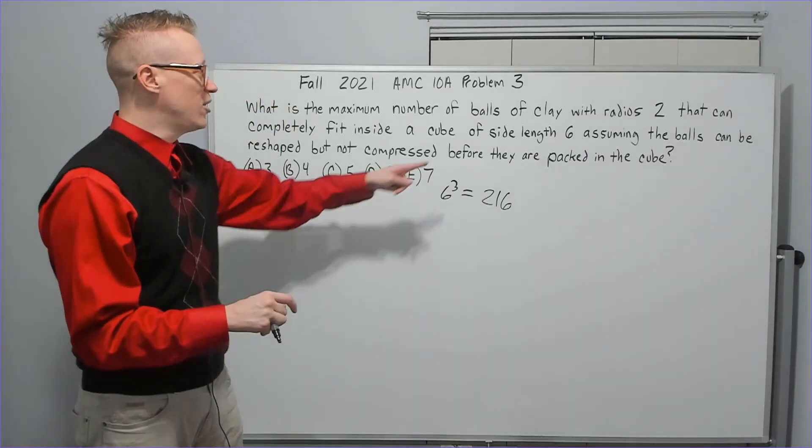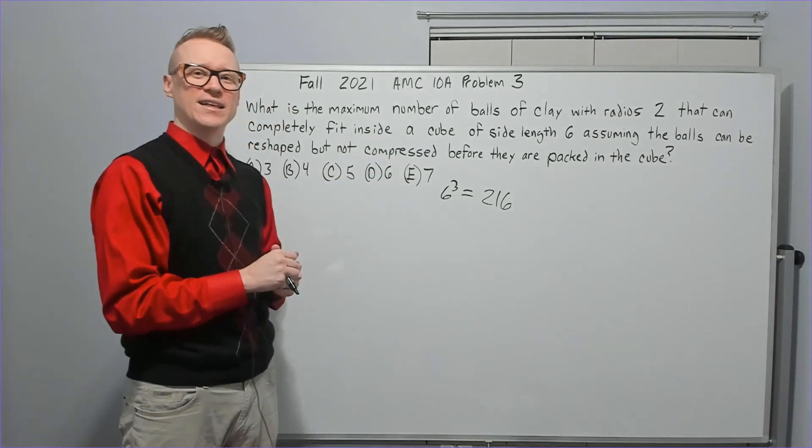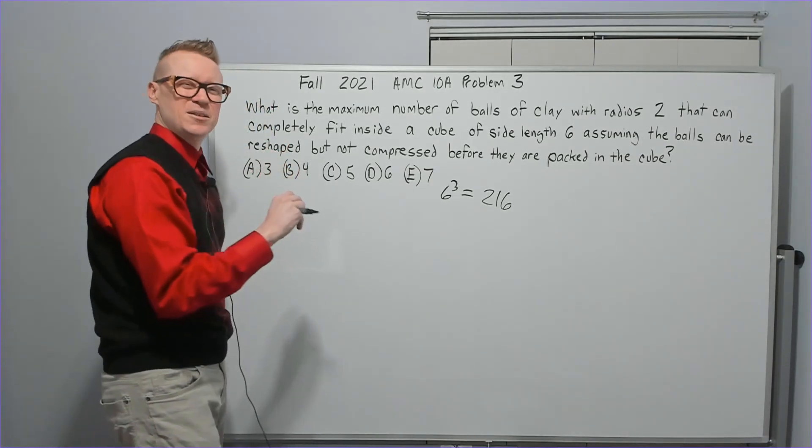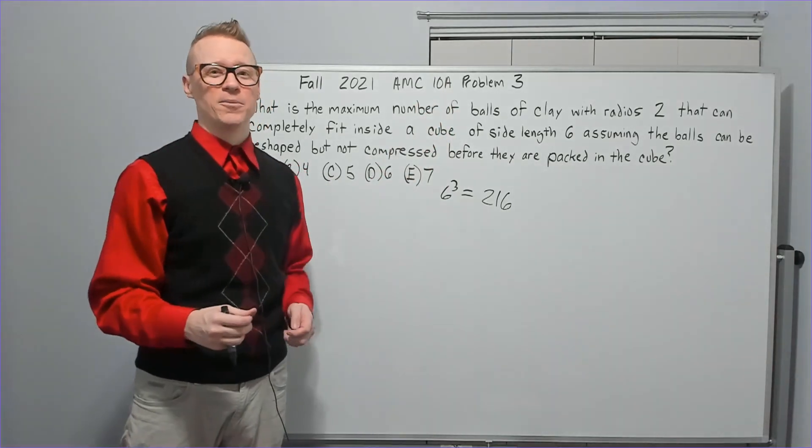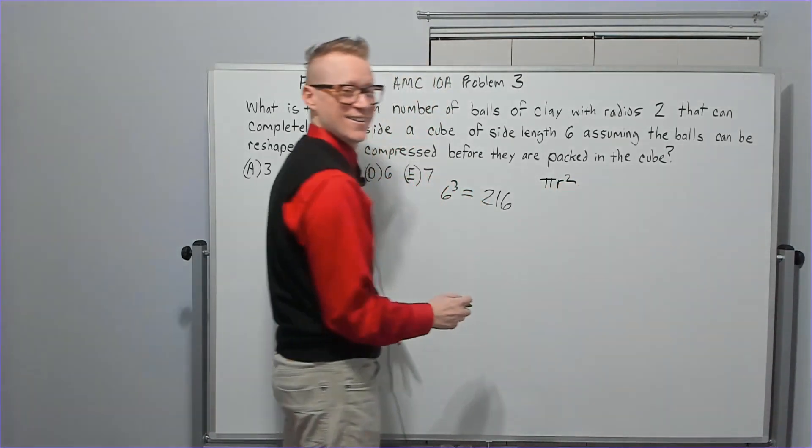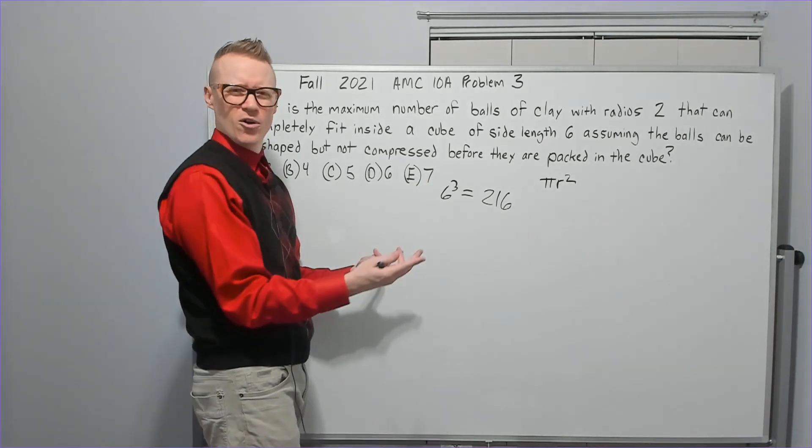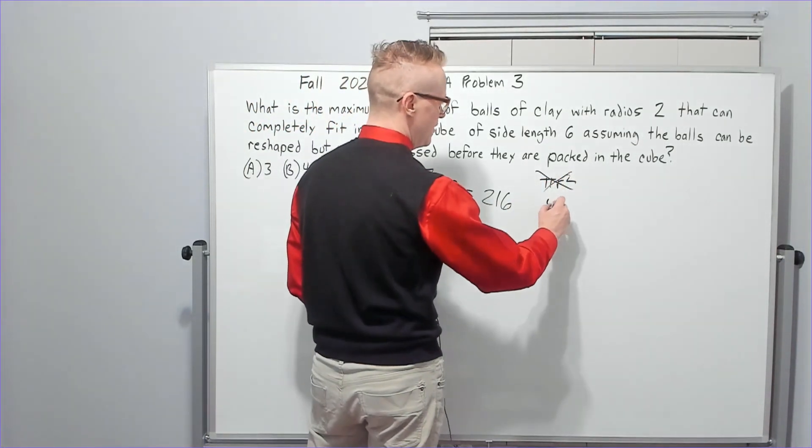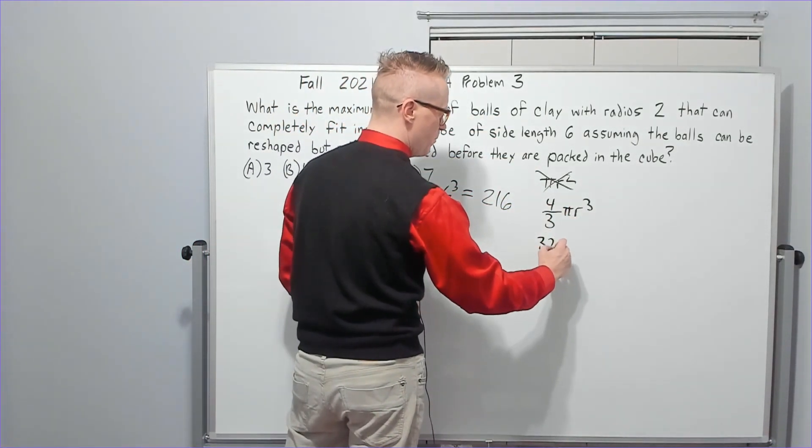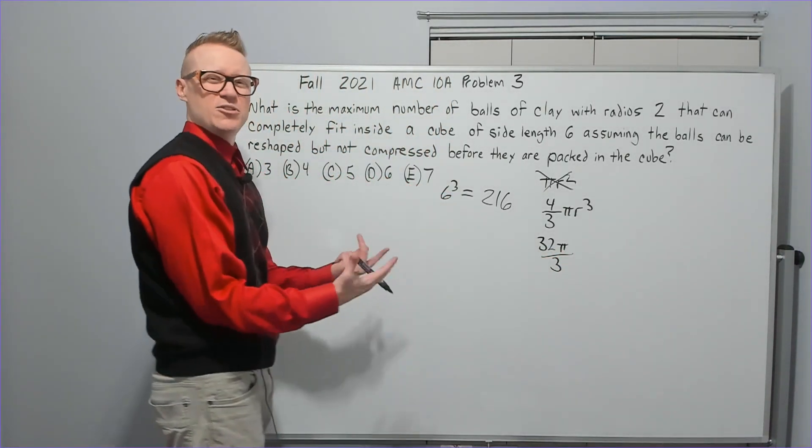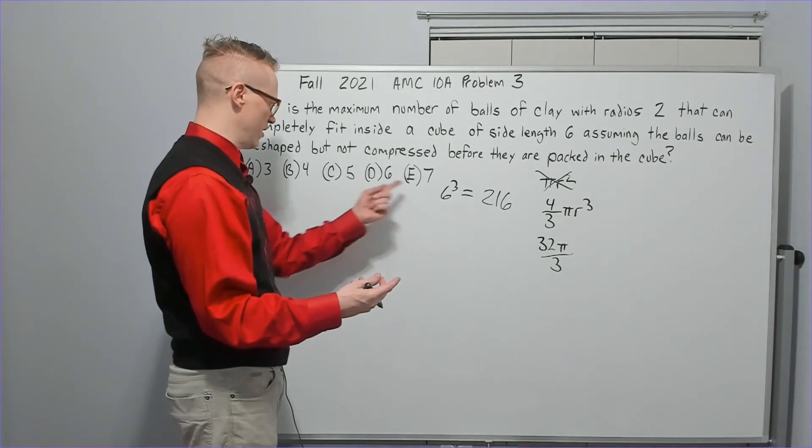So whatever the volume is of one ball, that's the same exact volume it will take up inside the cube, but you can shape it into something different. I actually took a little bit of time on this one as well. The main mistake that I made is I originally thought the balls were pi r squared. Maybe you guys did that too. That's not the formula for volume of a sphere. The volume of a sphere is four thirds pi r cubed. So now we drop this two in here, eight times four is 32 pi over three. That's the volume of one ball.